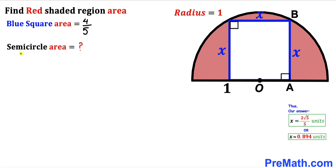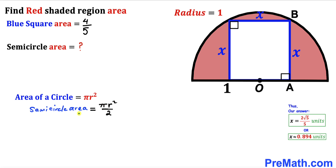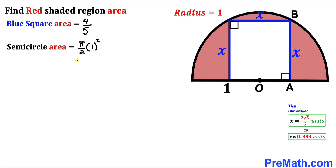Now we calculate the area of this semicircle. The area of a circle is πR², and since we are dealing with a semicircle, the semicircle area is πR²/2. With radius equal to 1, the semicircle area turns out to be simply π/2.